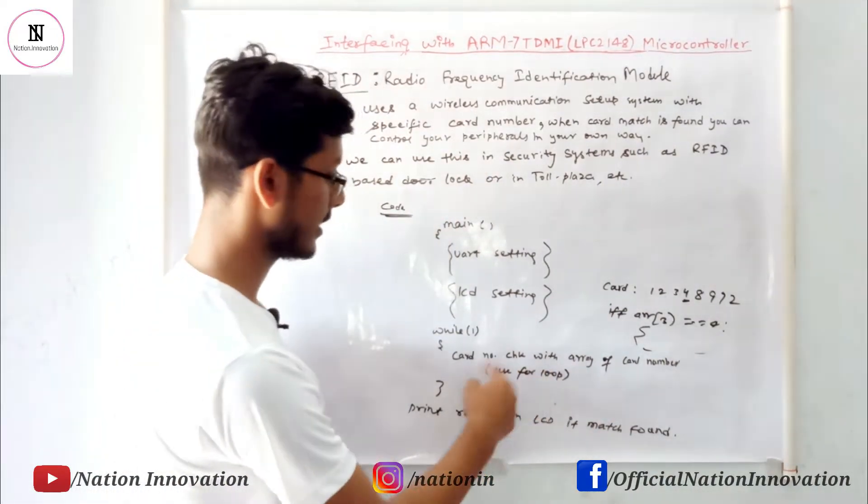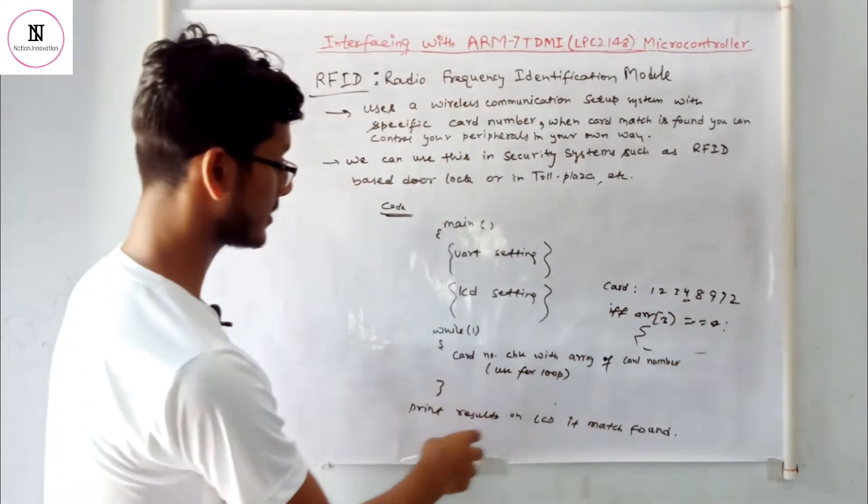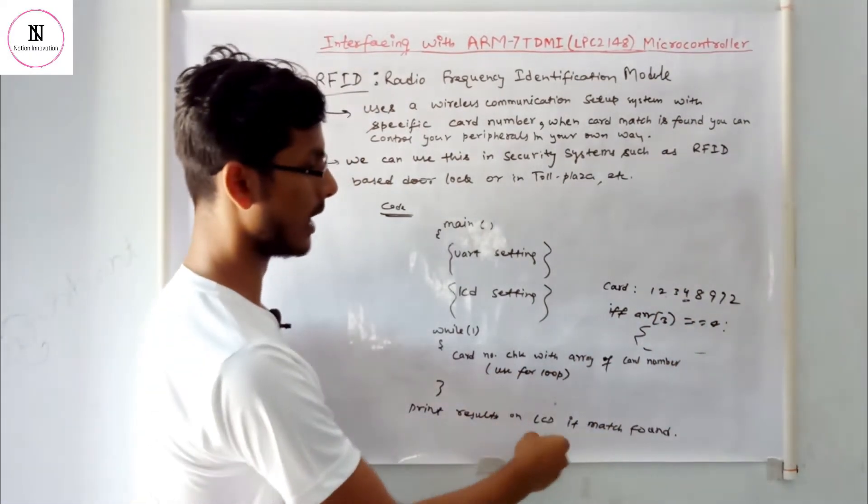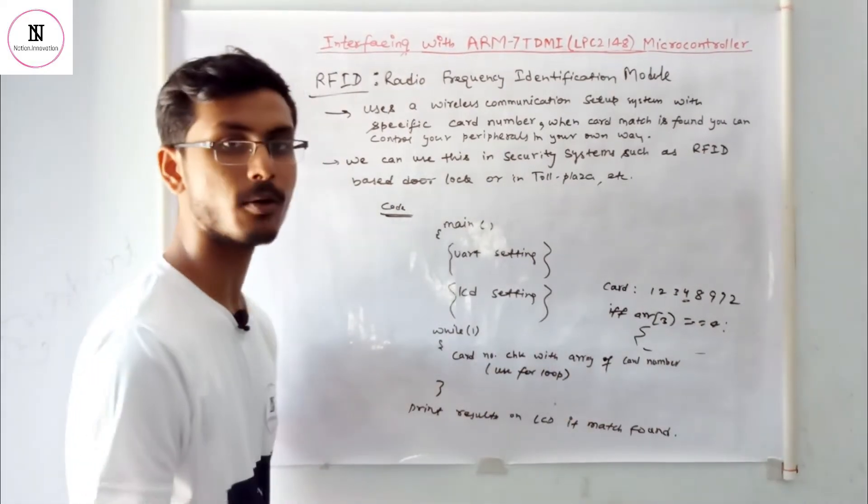We write and check if the bit is matching or not. If it matches, we print the result that the bit is matched and the card is valid, and we can perform our desired task.